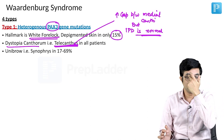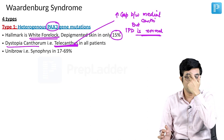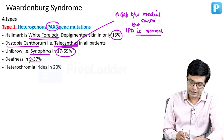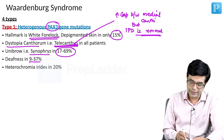Unibrow — a single eyebrow connecting in the midline, technically called synophrys — will be present in 17 to 69% of patients. Deafness will be present in 9 to 37%. Heterochromia iridis will be present in 20% of these individuals.